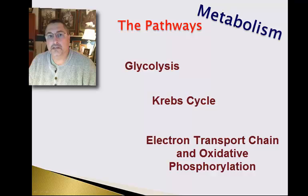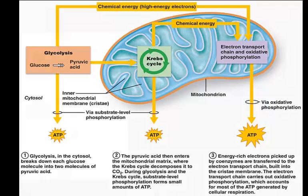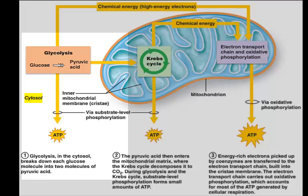Looking at this image, you can see that glycolysis occurs in the cytosol — the fluid component of the cytoplasm. Glycolysis is a set of about eight enzymatic reactions that take glucose and break it down to pyruvic acid, also known as pyruvate. Pyruvate is a three-carbon molecule, and in the process of forming it, glycolysis generates ATP.